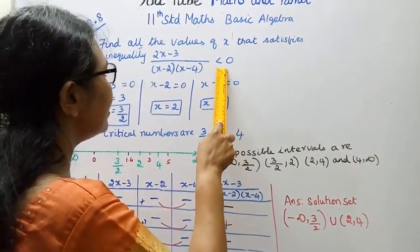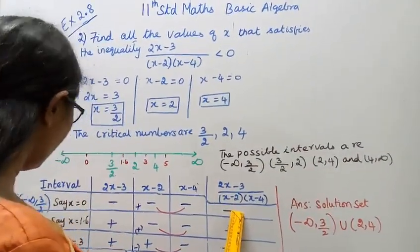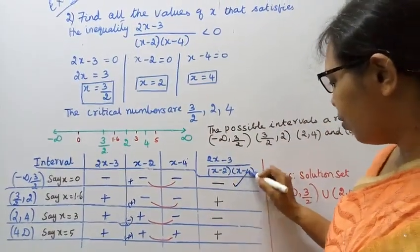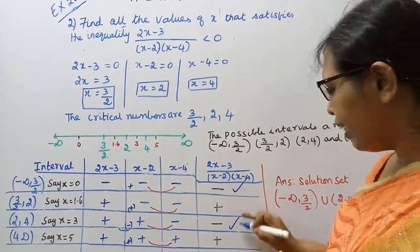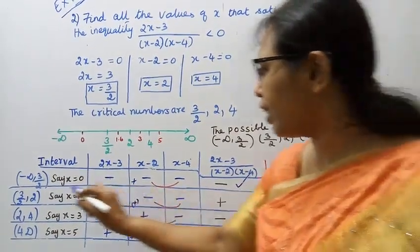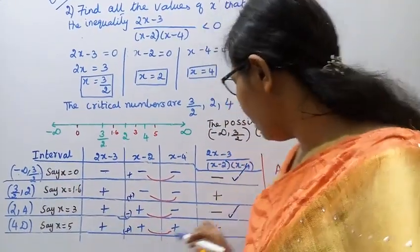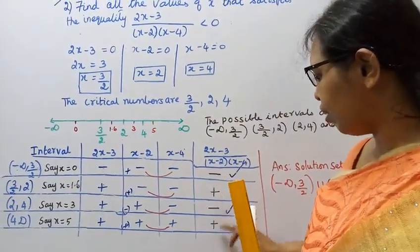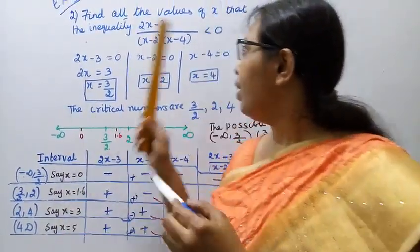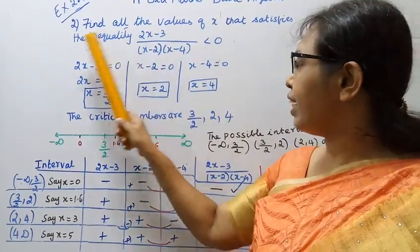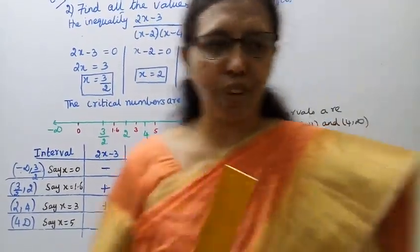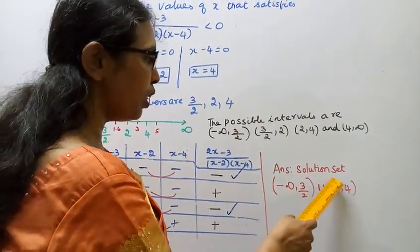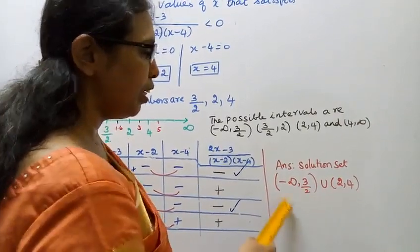The expression is less than 0 where the result is negative. The negative intervals are minus infinity to 3/2 and 2 to 4. Therefore, the solution satisfying the inequality is: minus infinity to 3/2 union 2 to 4.